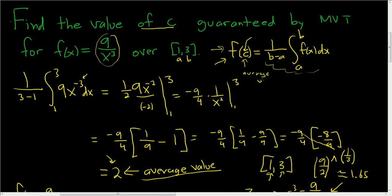And so if the question asks for the average value, you just work out this integral. So the average value in this case is 2. And if it wants the value of C guaranteed by MVT, you first find the average value.